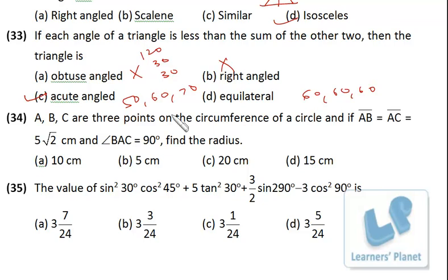So it needs to be an acute angle triangle, not necessarily equilateral. So acute angle is correct. In fact, acute angle triangle, equilateral is also an acute angle triangle. A, B, C are three points of the circumference of circle. If AB is equal to AC and angle BAC is 90 degree, find the radius.